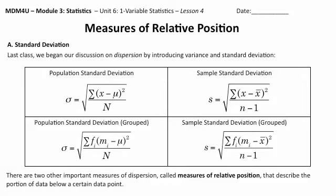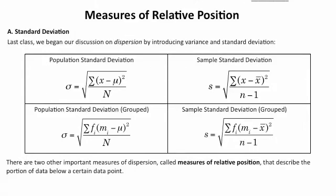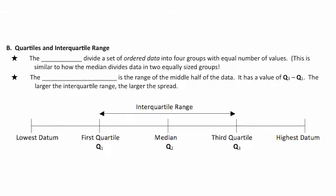Measures of relative position describe the portion of data below a certain point. Where the measures of spread and dispersion — standard deviation — dealt closely with the mean, the measures of relative position have a lot to do with medians. It's kind of like measures of dispersion as related to the median. We'll begin by looking at quartiles and the interquartile range.